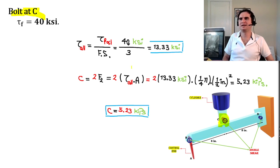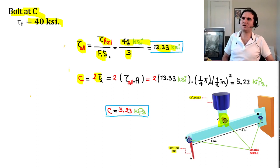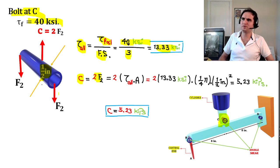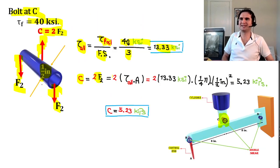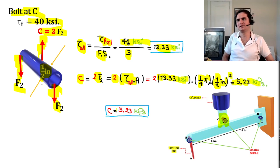Finally, the bolt at C is also in double shear. τ_allowable = 40 / 3 = 13.33 KSI. The upward force at C is: F_C = 2 × τ_allowable × A_C = 2 × 13.33 × (π/4) × (1/2)² . This gives us C4, the fourth possibility for the maximum upward force at C.